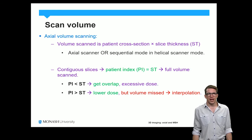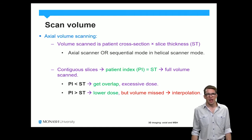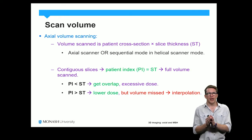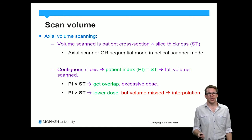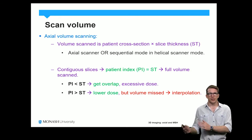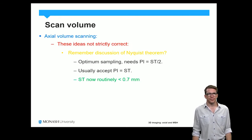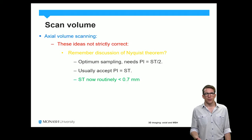In terms of the scan volume, in axial scanning we previously talked about a patient index. When our patient index is equal to our slice thickness, we have contiguous slices, meaning that the slices are all one after the other with no overlap. If our patient index is less than or greater than our slice thickness, we're either going to have overlap or we're going to need to do interpolation. To flesh this out mathematically in more detail, we can relate this back to the Nyquist theorem.